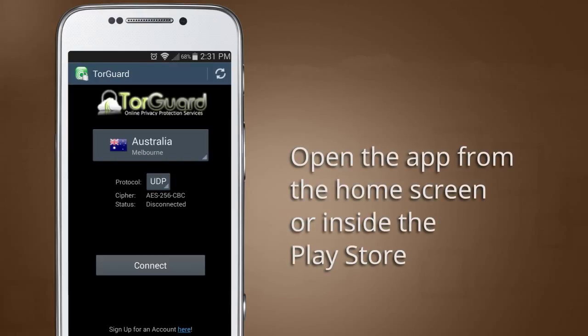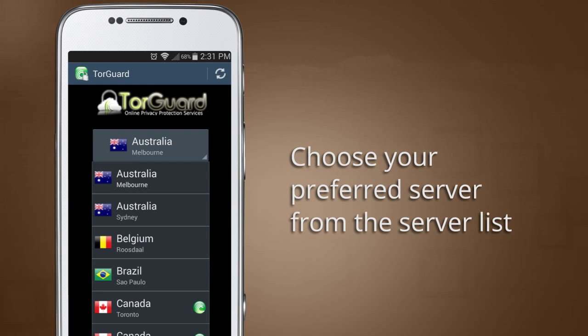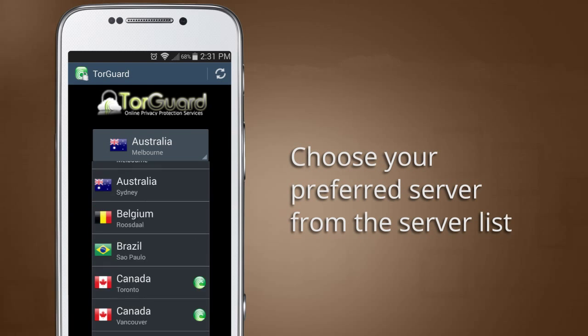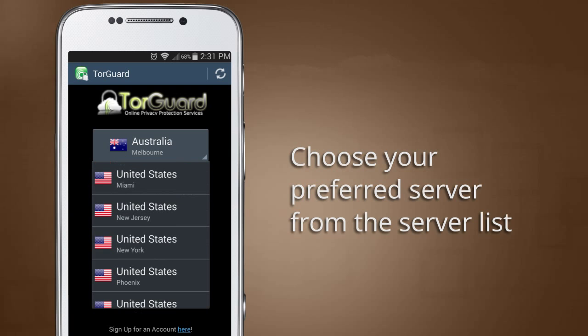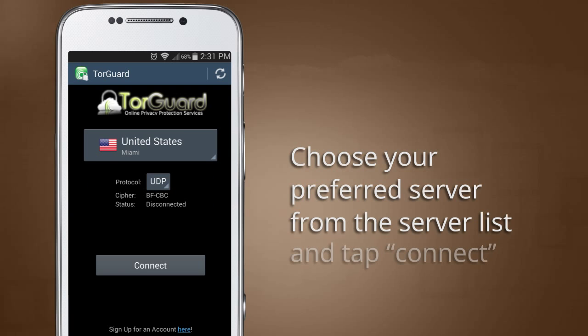On the main TorGuard app screen, tap the server drop-down list to choose your preferred VPN server. For this tutorial, we will connect to the Miami VPN servers. Tap the Connect button to proceed.